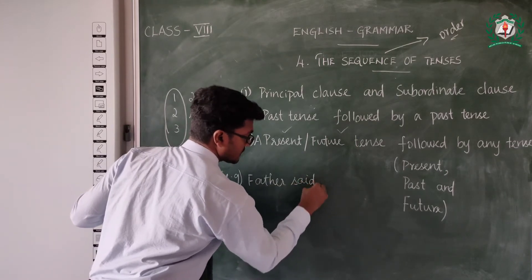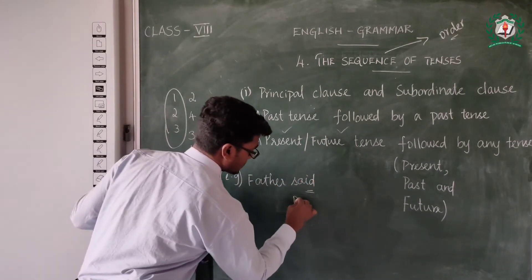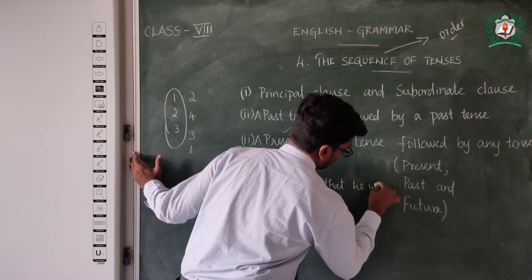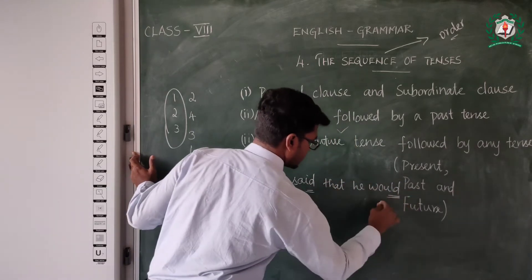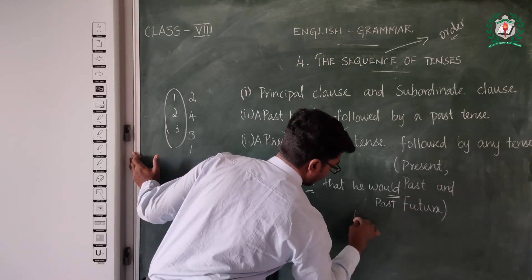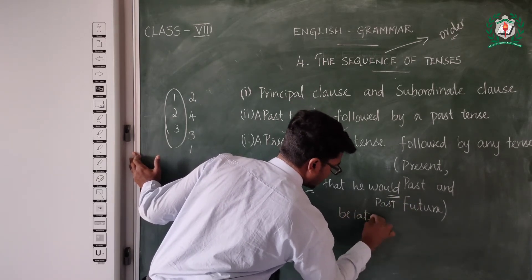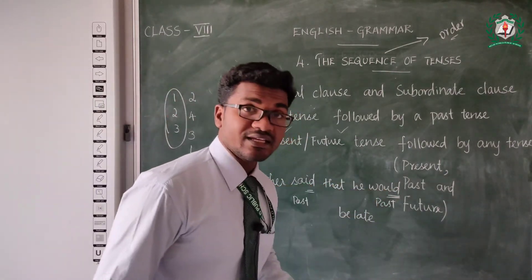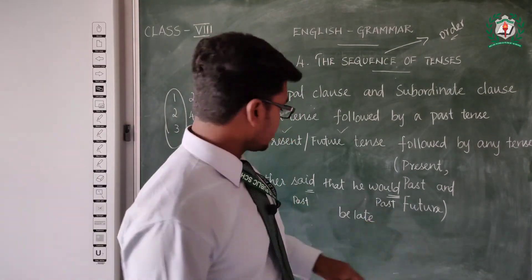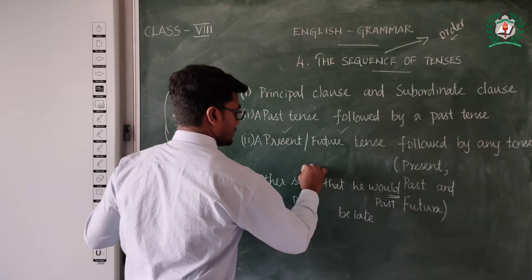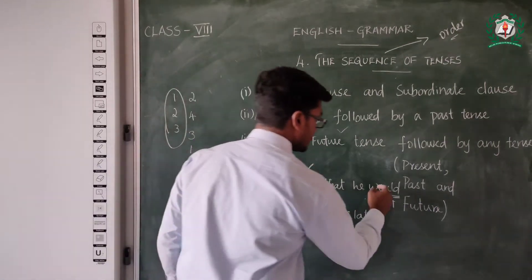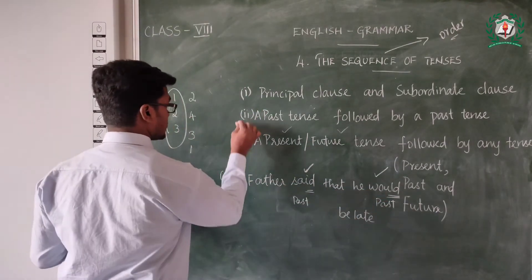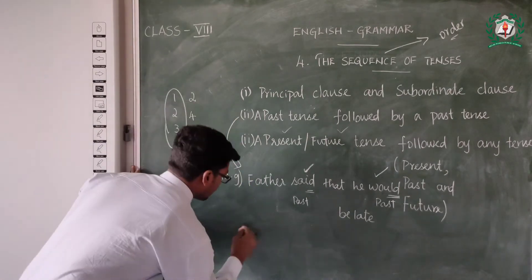In the first example: 'Father said that he would be late tonight.' Here, 'said' is past tense, and the subordinate clause uses 'would be' — also past tense. So the sentence started with past tense and the subordinate clause also has past tense. This is the example of the first rule.